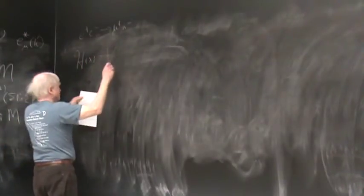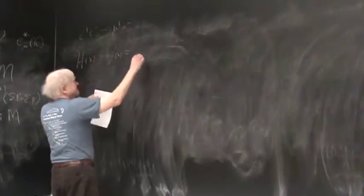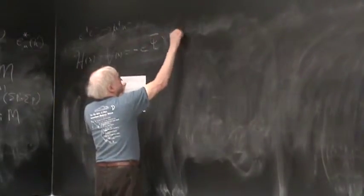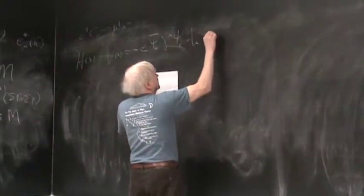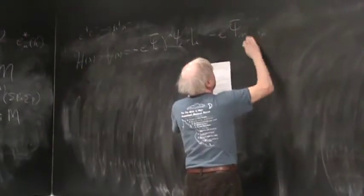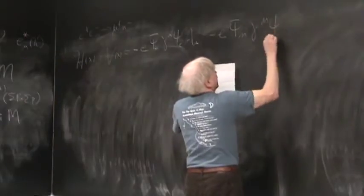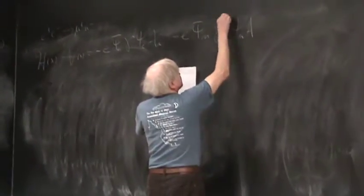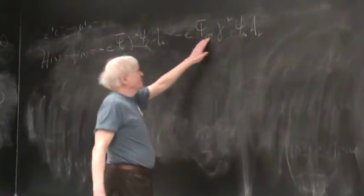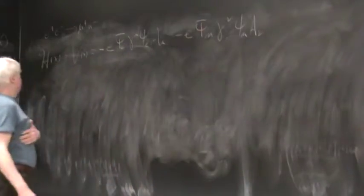In this particular case it's minus e ψ̄_electron γ^μ ψ_electron A_μ. But then it's also minus e ψ̄_muon γ^μ ψ_muon A_μ. This again is a problem - it's perfectly all right to use μ for muon, but we'd be better off if we could switch to Latin letters on the fly.